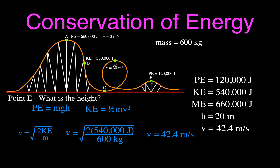We calculated potential, kinetic, mechanical energy, height, and velocity at all points. The main concept to understand is conservation of energy: mechanical energy always remains constant. The sum of potential and kinetic at any point stays constant — 660,000 joules — because there's no friction and no energy lost to heat. If you know one value, you can calculate the other. Please subscribe to Step-by-Step Science, click the notification bell, give a thumbs up, leave a comment, and share this video. See you in the next one!